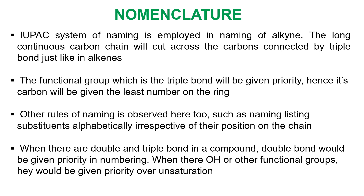Remember, irrespective of the position of a substituent on the carbon chain, alphabetical order must be observed. When there are both a double bond and a triple bond in a compound, the double bond will be given priority in naming, meaning that the double bond will be given the least locant number over the triple bond.